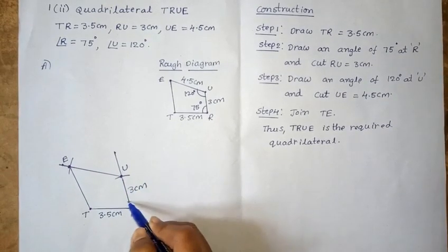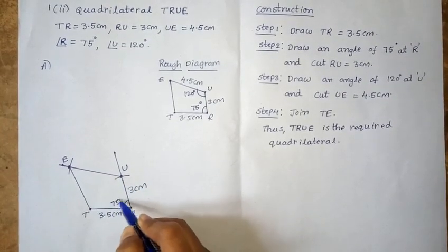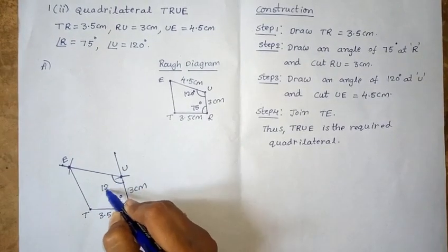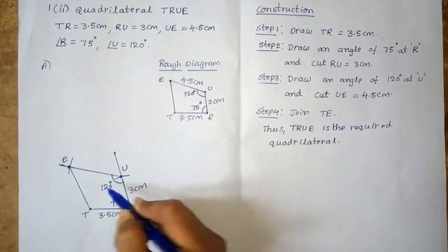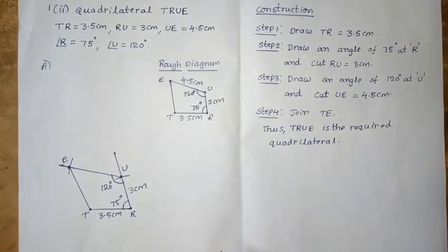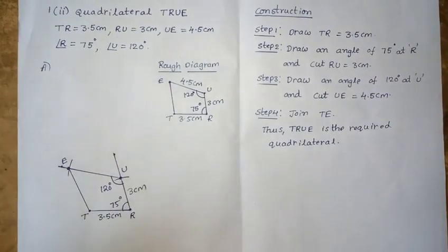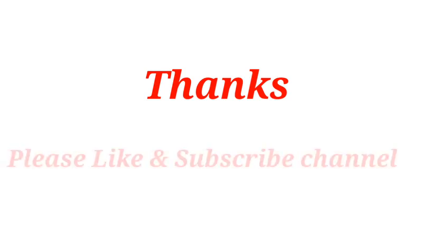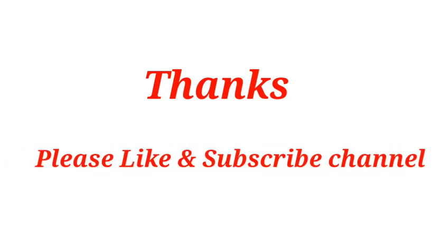The quadrilateral TRUE is formed with RU equal to 3cm, angle R equal to 75 degrees, and angle U equal to 120 degrees. This is the construction of quadrilateral T-R-U-E. OK students, this is about 4.4 exercise. Thanks for watching this video. For more videos, please like and subscribe to my channel.